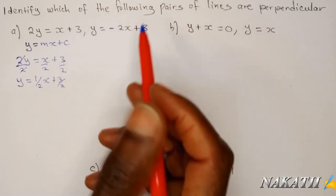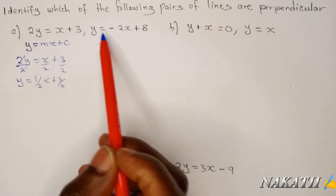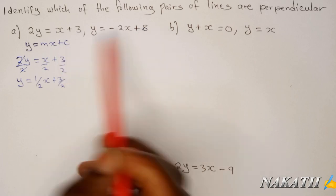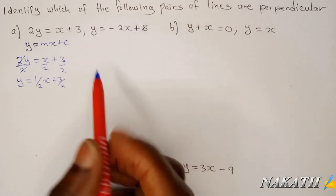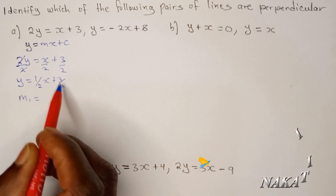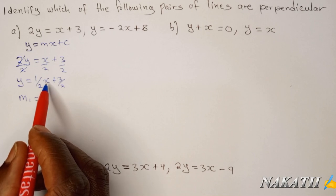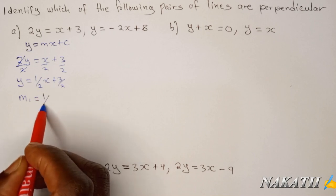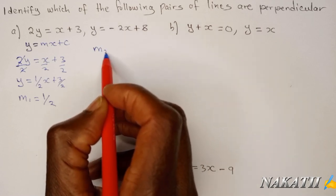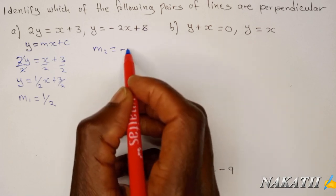The second equation is already in that form — we only have Y on this side, starting with negative 2X, then followed by 8 which is C. So from the first equation, M1 is whatever is in front of X, which is 1/2. From the second equation, M2 is whatever is in front of X, which is negative 2.